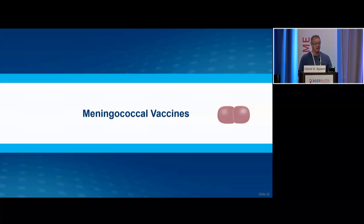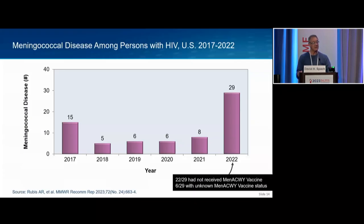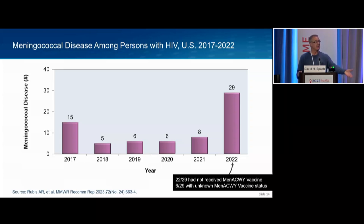Now let's look at meningococcal vaccines, which I'd say is on the lower end of priority in many clinicians' minds. But here's an important MMWR published this summer by the CDC — something that rises to that level means there's significant new information. There was an increase in meningococcal disease among people with HIV from 2017 to 2022, and in that last year, 2022, essentially almost all of those people had not received meningococcal vaccine — a potentially life-threatening but 100% preventable disease.